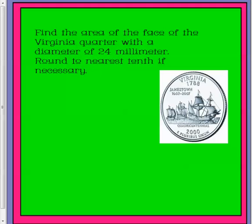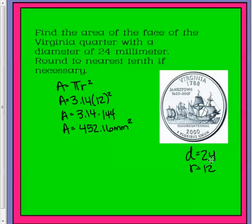Here's my work. They give us the diameter, so we have to find the radius. And when we square that, we get 144. Taking that times pi, we get 452 and 16 hundredths millimeters squared. But they want us to round to the nearest tenth.